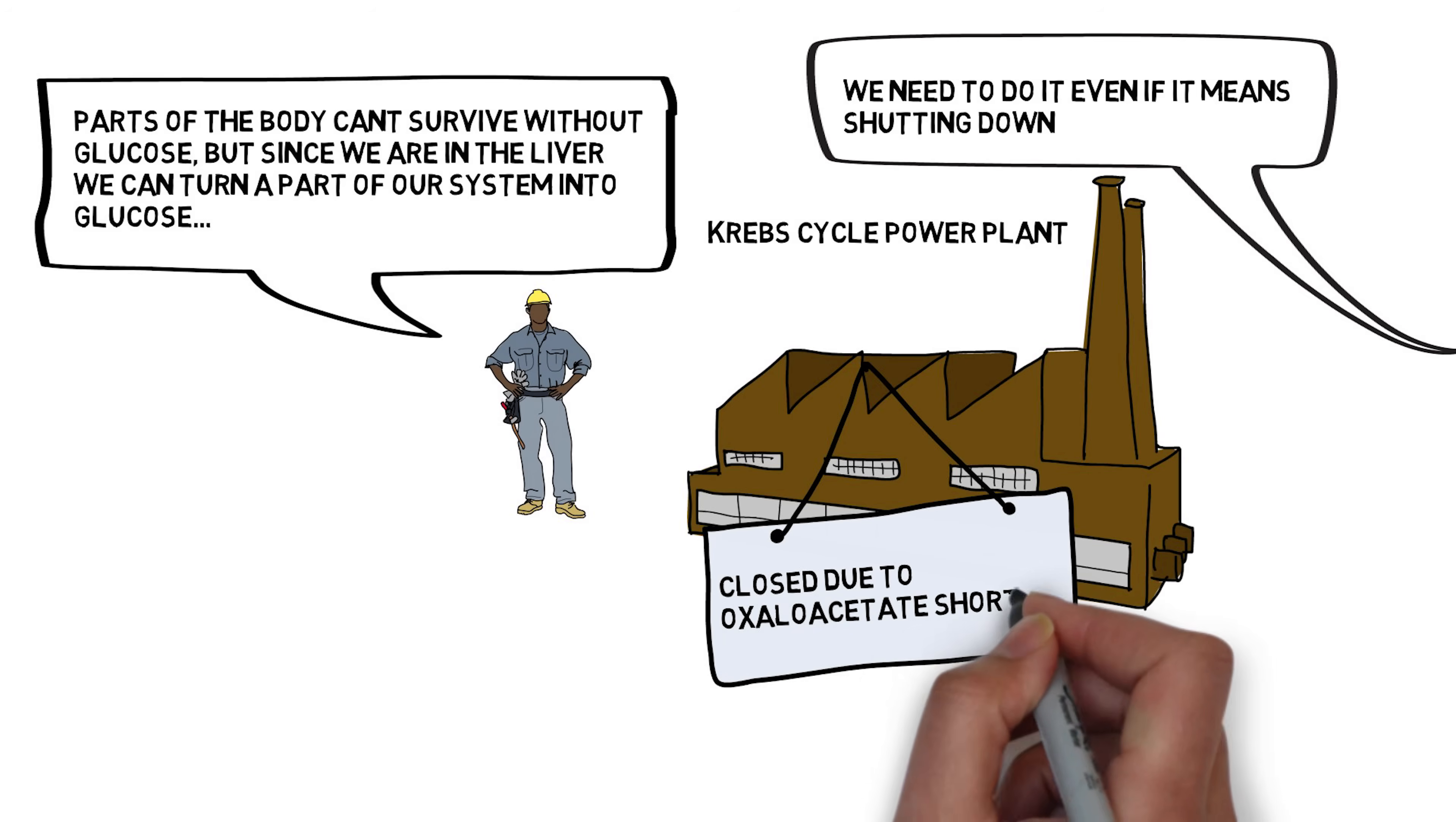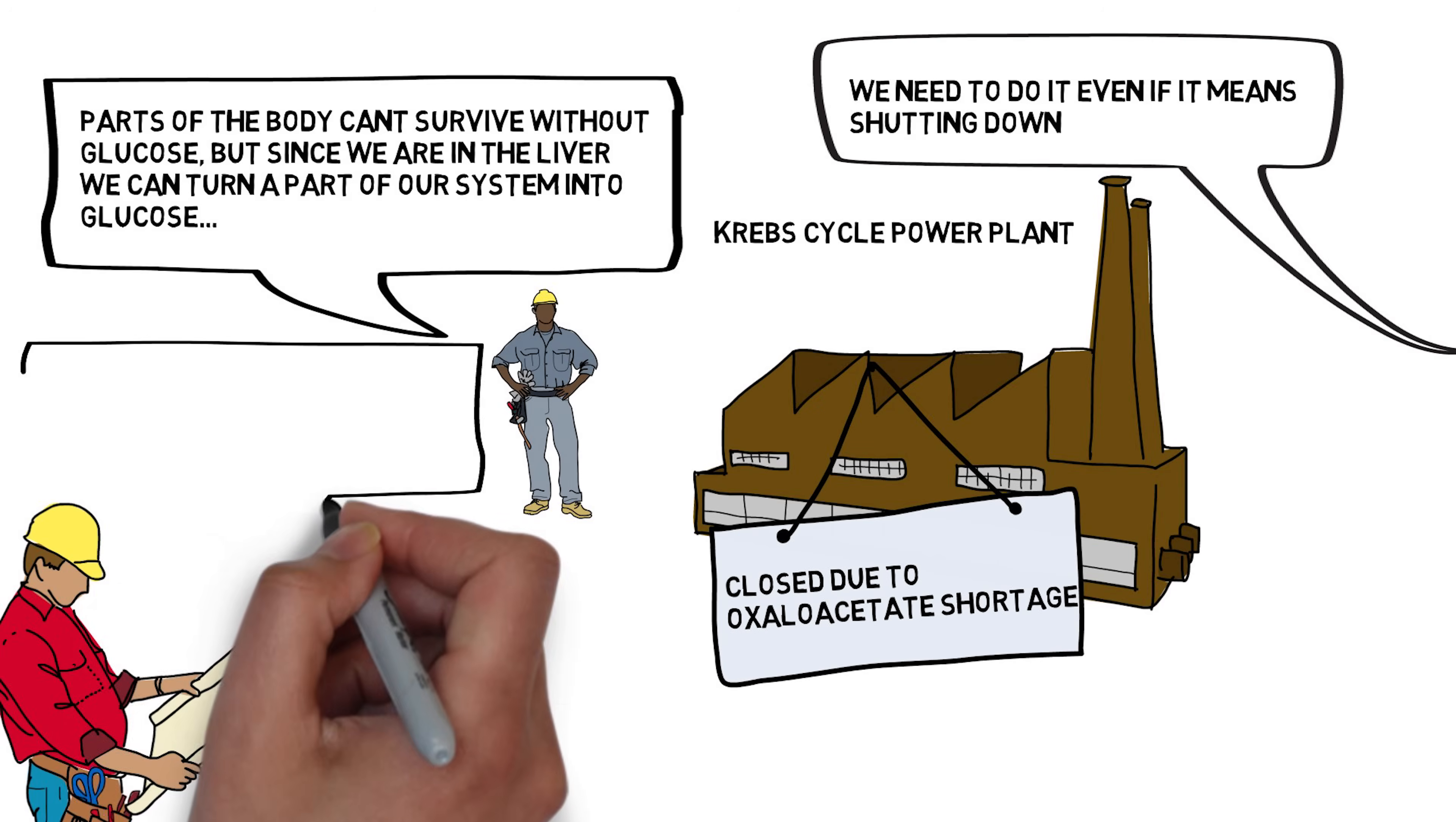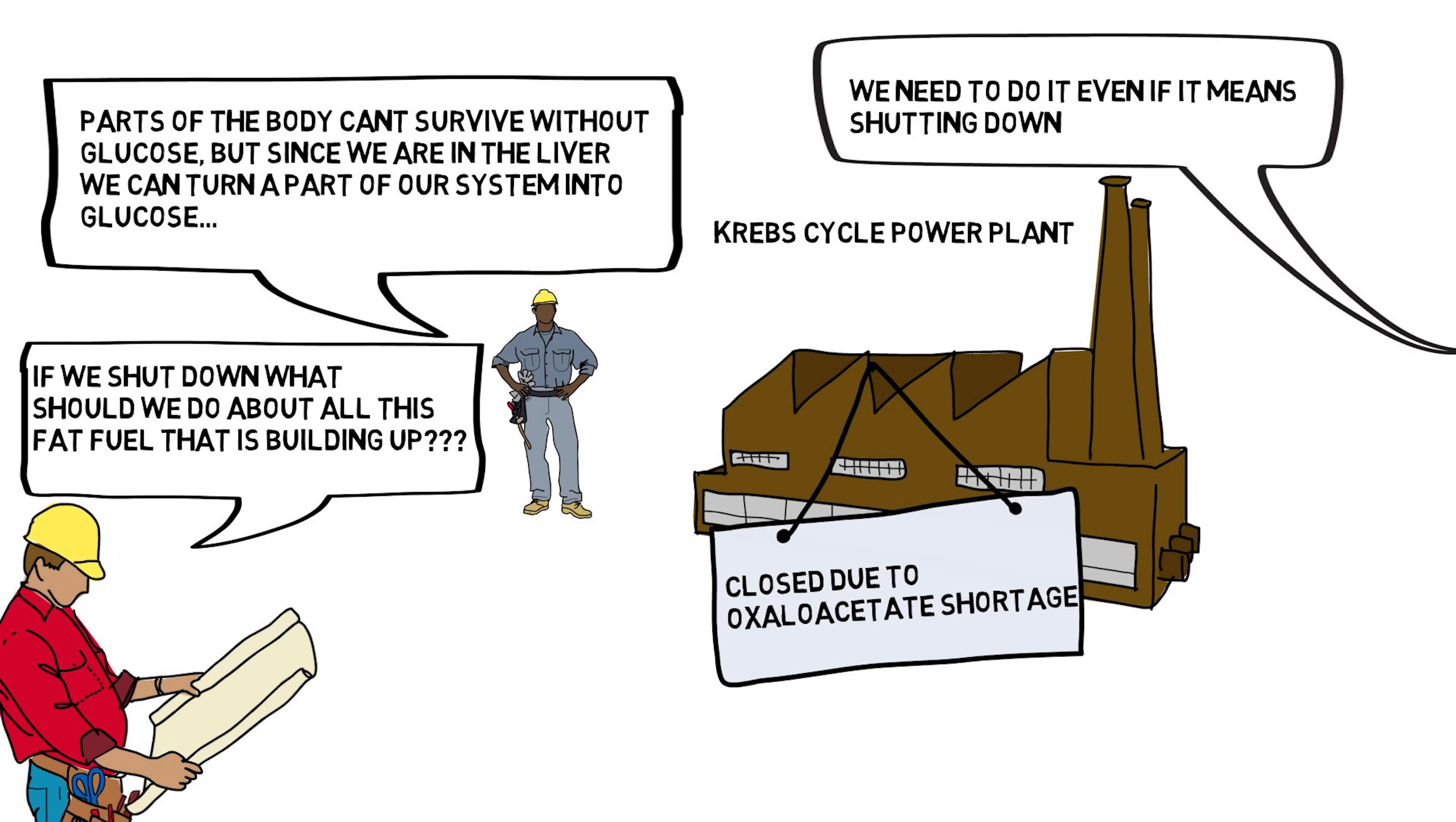Think of the breakdown of fat in your liver like deliveries of fuel to the Krebs cycle power plants in the liver. But the workers in the power plant realize that the fuel they are running their air conditioning with could, with a few tweaks that can only be made in the liver, be better used by cells elsewhere in the body which can only burn that fuel. So, like a good neighbor, they hamper their own factory to send this fuel to people who need it. Now their fuel deliveries are piling up. So what should the liver do?